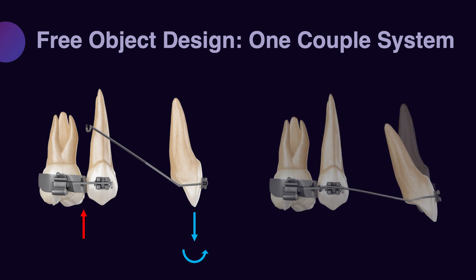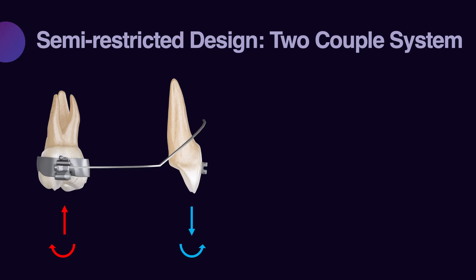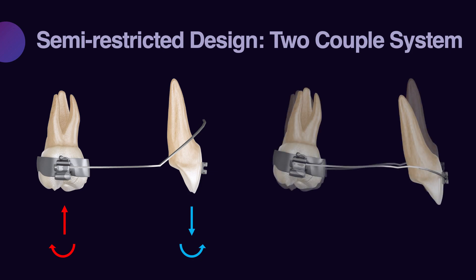There is no restriction on the amount of extrusion of the anterior teeth with a one-couple system. On the other hand, if you decide to put a two-couple system right away, there would be restriction on the amount of extrusion of the anterior teeth. A one-couple system is considered free object design; a two-couple system, because the type of tooth movement of the anchor and target unit affect each other, is considered a semi-restricted design.